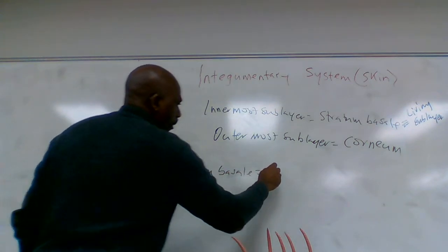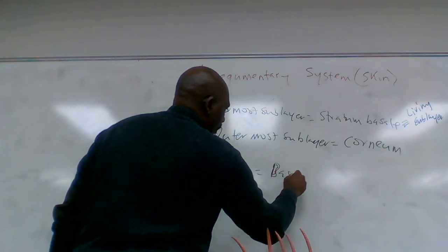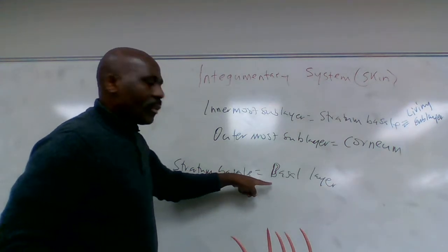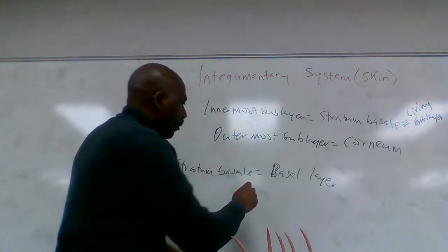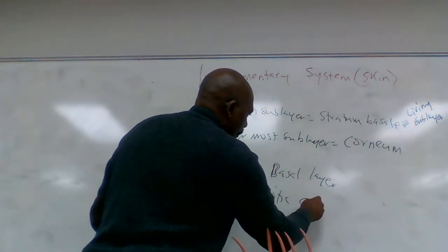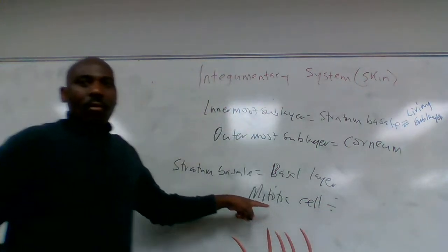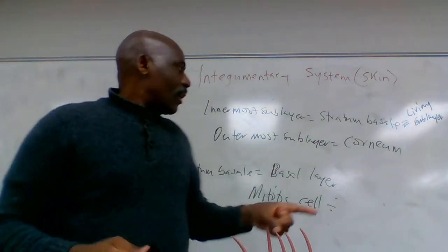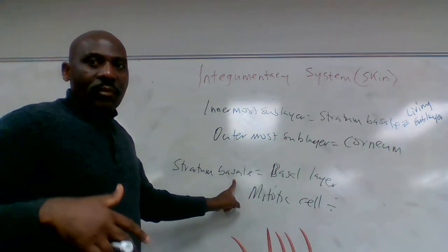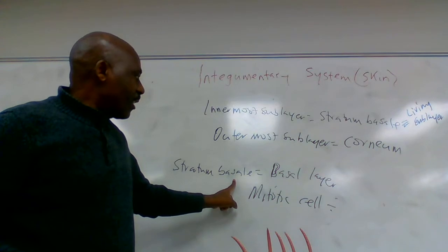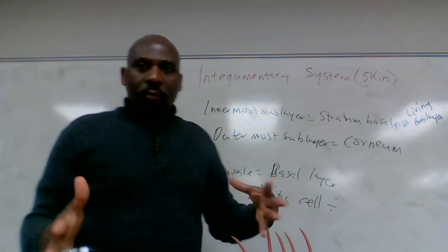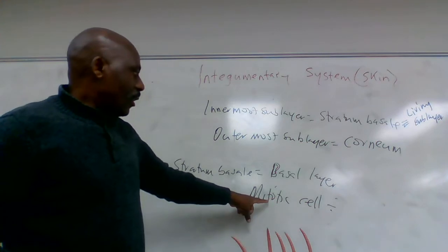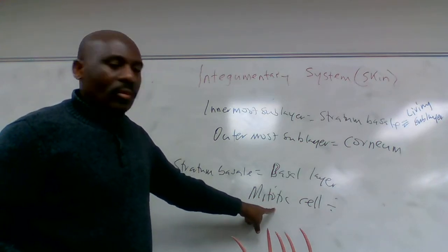Stratum basale simply means the basal layer. We know that this layer is living because it is a site for mitotic cell division. The upper layers of the skin above the stratum basale are progressively dead as we move toward the surface. When those dead cells are shed off, they are replaced by cells produced via mitotic cell division at the stratum basale.